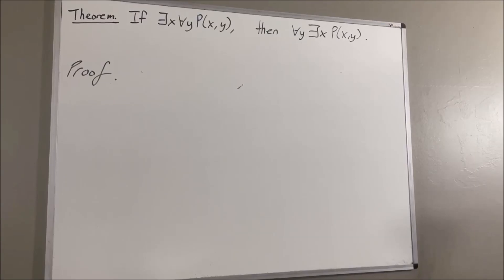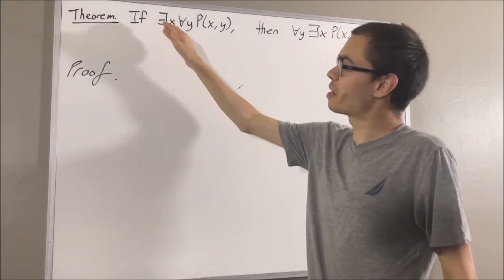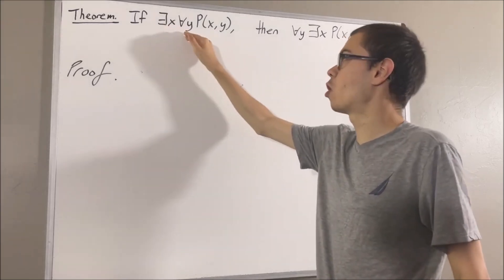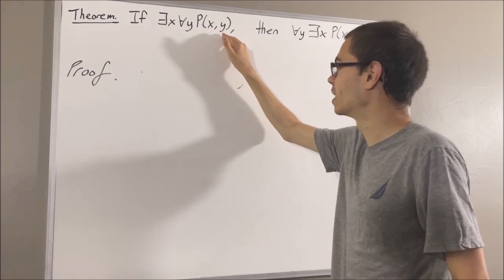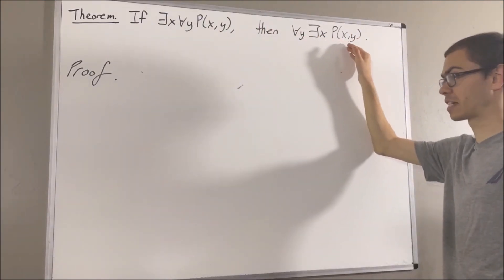Hello! In this video, we're going to prove the following theorem. If there exists an x such that for all y, P(x,y), then for all y, there exists an x such that P(x,y).